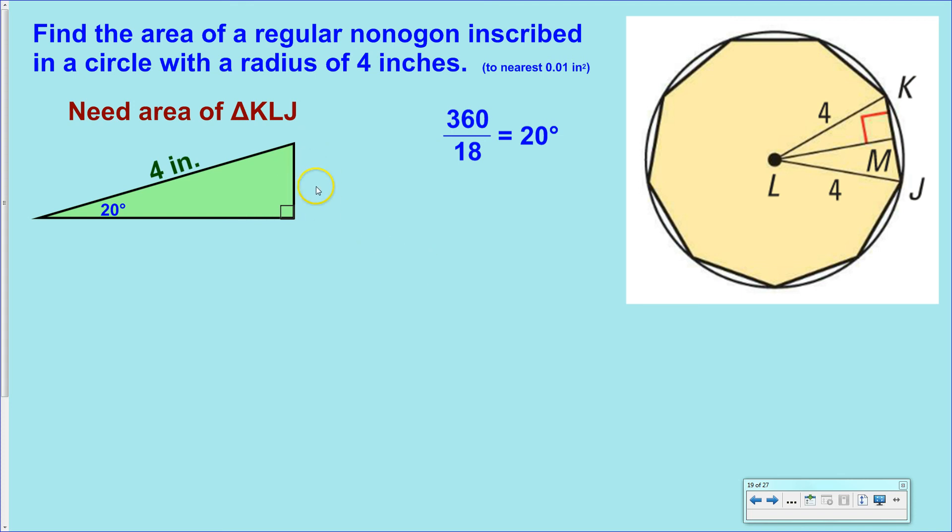So, the lengths that we're really interested in are this leg and this leg. So, we might as well put some labels on them that make sense. This leg right here is one-half the length of the side. And this leg right here is the apothem, the length of the apothem. So, we can do a little trig here. Sine of 20 is one-half s over 4. And cosine of 20 is a over 4. Set up both of those.